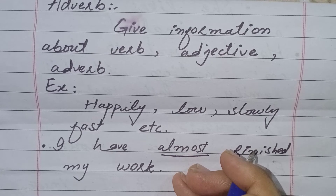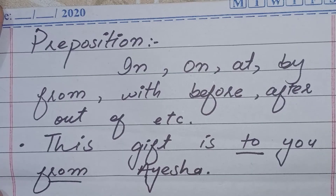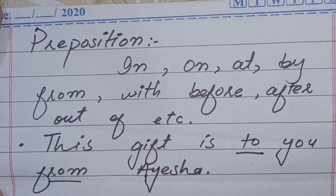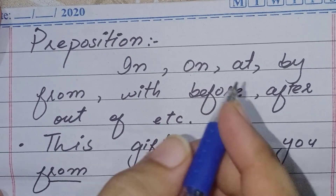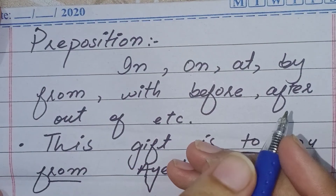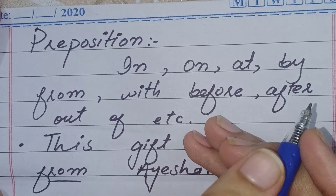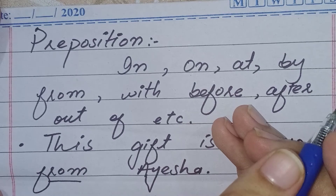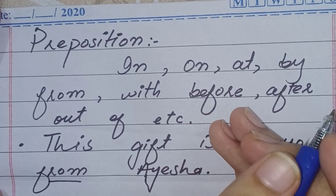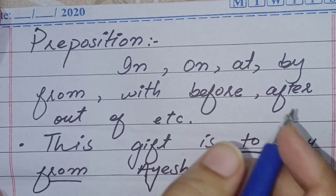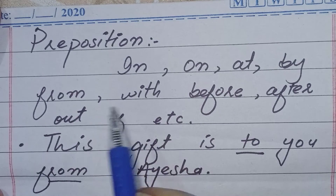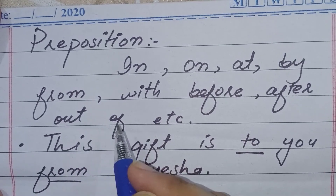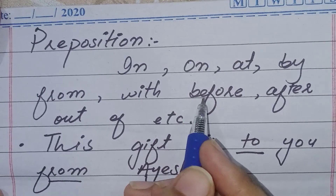Now we move to the sixth part of speech: preposition. A word or group of words used before a noun or pronoun to show place, position, or method is called a preposition. Examples include: in, on, at, by, from, with, before, after, out of — all of these are prepositions.